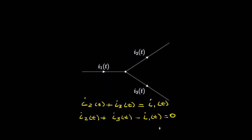It's important to note that we're writing these equations relative to the reference directions that we've defined for the currents, not relative to the values the currents take. It's possible that some or all of these currents will have negative values associated with them, but it's the reference direction for the currents and only the reference directions that we use to write down these KCL equations.